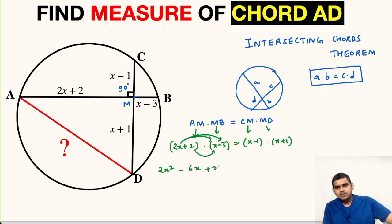Then this will be 2X and minus 6 equals... Here we will use identity that A plus B multiplied with A minus B equals A squared minus B squared. So this will be X squared minus 1.